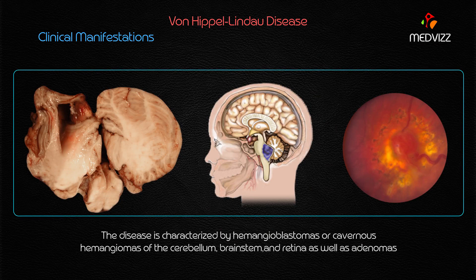Cavernous hemangiomas are large vascular spaces filled with blood. The cystic lesions seen in the cerebellum and brainstem are hemangioblastomas. Whenever you see hemangioblastomas associated with headaches, ataxic gait, and a 15-year-old patient, it is von Hippel-Lindau — there is no other disease which causes all of this.